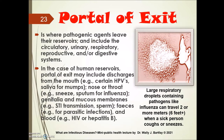The portal of exit is where pathogenic agents leave their reservoirs, and includes the circulatory, urinary, respiratory, reproductive, and digestive systems. In the case of human reservoirs, the portal of exit may include discharges from the mouth for certain HPVs, saliva for mumps, the nose or throat during a sneeze, sputum for influenza, genitalia and mucous membranes for STI transmission, feces for parasitic infections, and blood and blood products for hepatitis B and HIV.